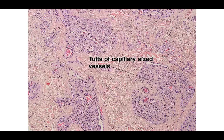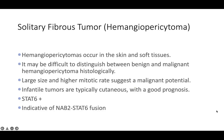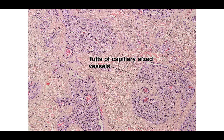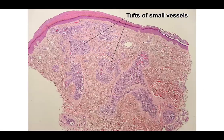At higher power you can see the tufts of capillary-sized vessels. These are so well-circumscribed that if a tufted angioma is in your answer choices, you should select it. The distribution is not the same as the lobular pattern of a lobular capillary hemangioma, and there is no collarette — which would also argue against a lobular capillary hemangioma.